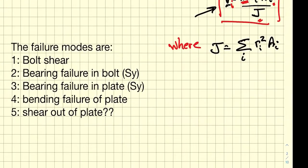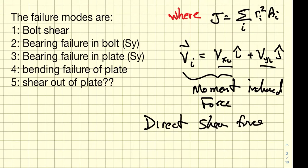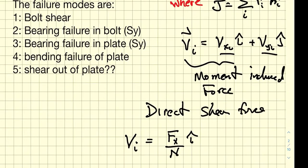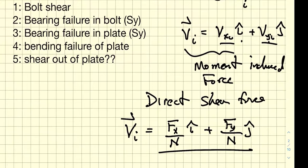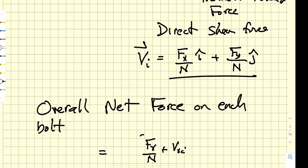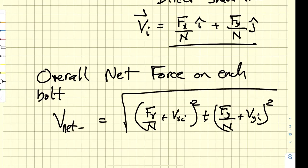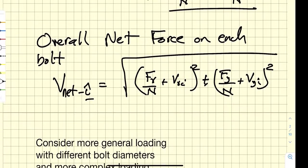Once we have the moment-induced shear magnitudes, each bolt has vector components VxI in the i-direction and VyI in the j-direction. The direct shear force at any bolt is Fx over the number of bolts in the x-direction and Fy over the number of bolts in the y-direction. We add those components to get the net force on each bolt: the square root of (Fx/N + moment-induced x-force)² plus (Fy/N + moment-induced y-force)².